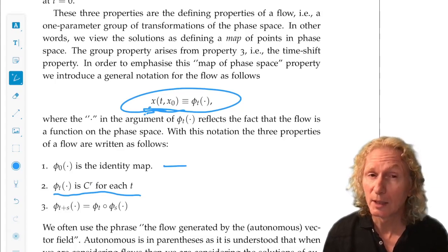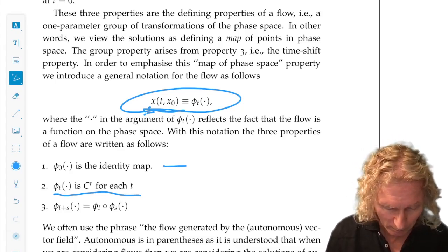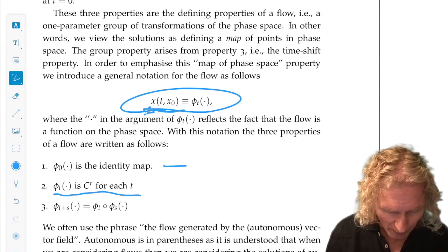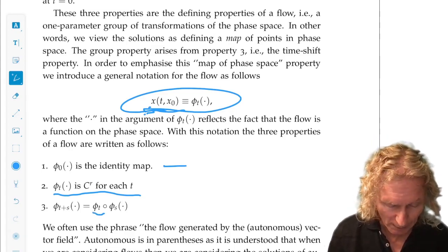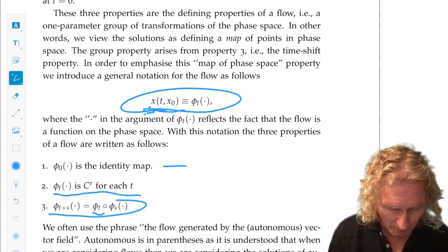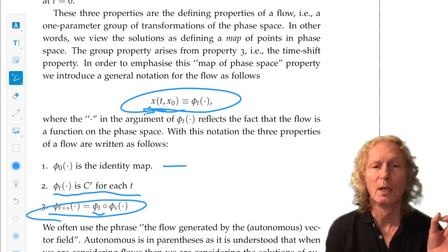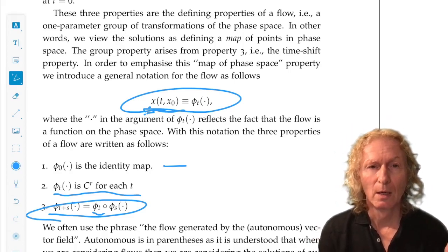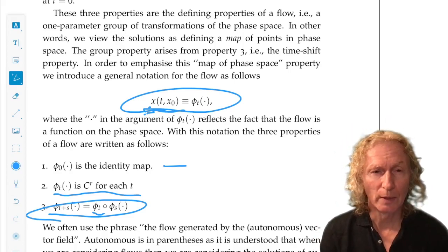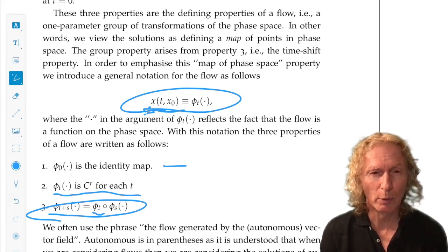And the last property: phi at t plus s, time shifted, is equal to phi sub t composed with phi sub s. This looks like a group property. And it is. Group composition. This is the definition of a flow. On the phase space, a flow satisfies these three properties. It's also a one parameter, the parameter is time, group of transformations of the phase space.